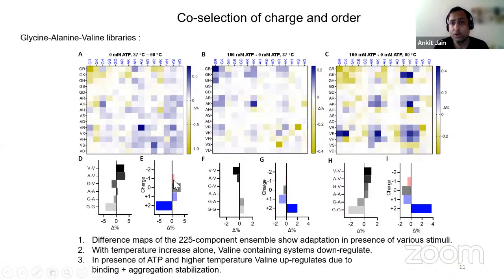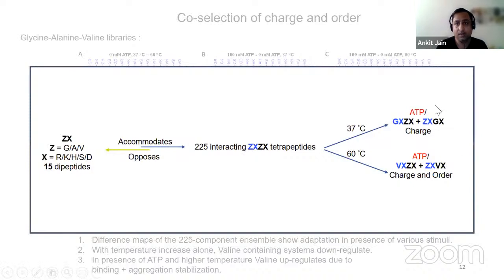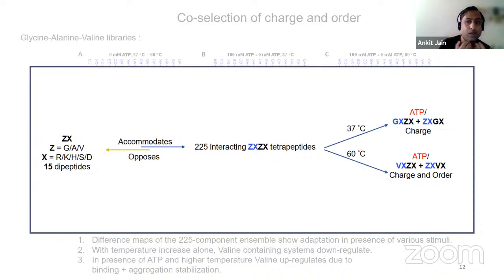When you actually increase temperature, these are still islands — still positive species that are amplifying. However, these are now valine-rich species, with positive charge but valine combinations with alanine and such. What we think is happening: at lower temperature it's just the charge that's amplifying it, but at high temperature it's charge plus order. When temperature is increased, everything actually melts — only those exist that can bind to ATP and assemble, and that's the valine-rich system. So this is an adaptive system in which you can look at 225 products and see how a complete ensemble is changing over time with these stimuli.